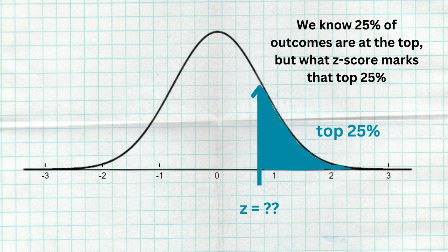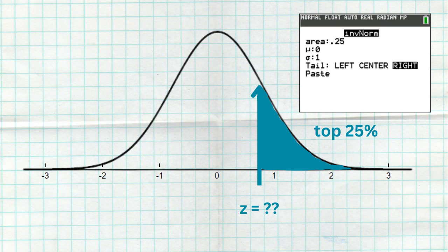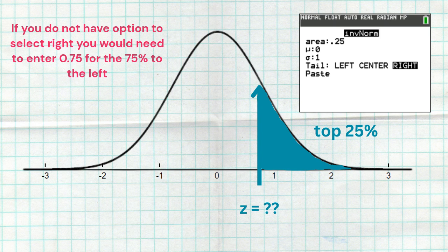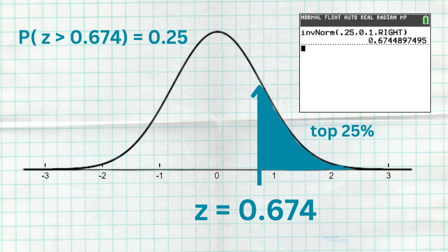In this next example, we're looking at a shaded region representing the top 25%, and we want to know what Z-score marks where that top 25% begins. We go to invNorm, type in an area of 0.25, and make sure we select right because we're looking at the proportion to the right. If you don't have the option to select right, you would type in 0.75 instead, because the top 25% is simultaneously the bottom 75%. We get a Z-score of 0.674, meaning 25% of outcomes are above it and 75% are below.